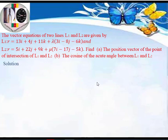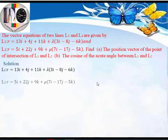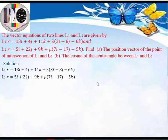For the solution, we are going to look for the position vector of the point of intersection of lines L1 and L2. These are lines in three dimensions in the i, j, and k planes. At the point of intersection, the two lines must be equal, so L1 must equal L2 at that point.